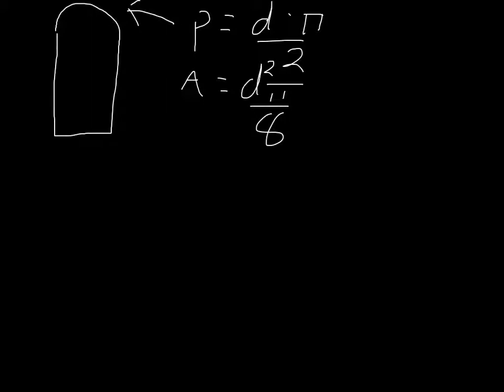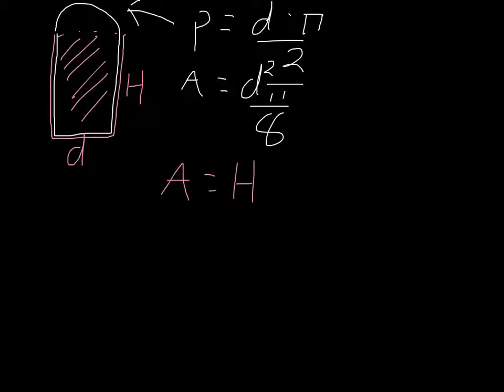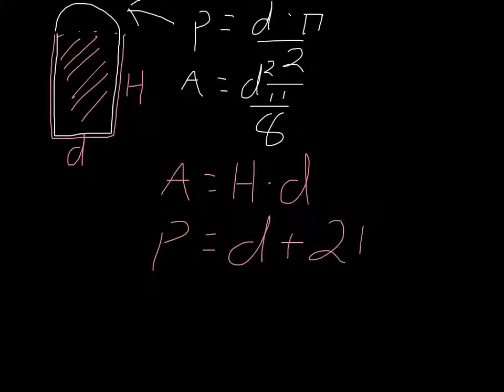And now what about for the rest of the area, this area that I'm going to highlight in red? Well for this one, we're going to call this distance here d, and this distance h. So the area of this region here will simply be equal to A = hd, and the perimeter will simply be equal to d + 2h.